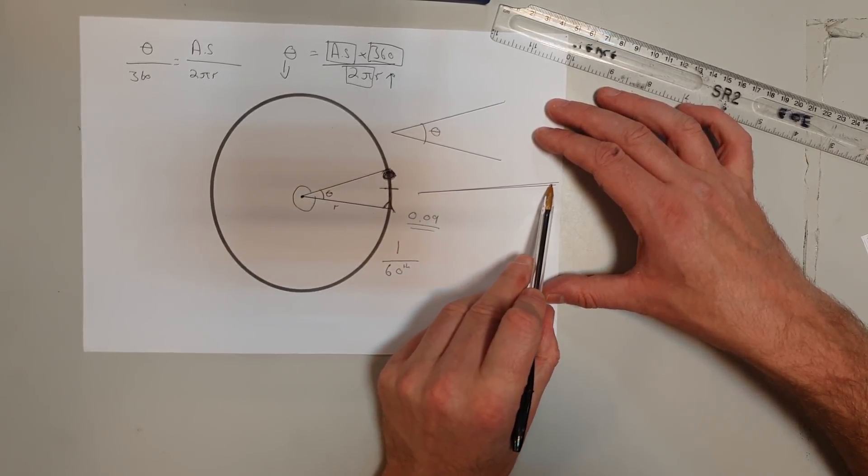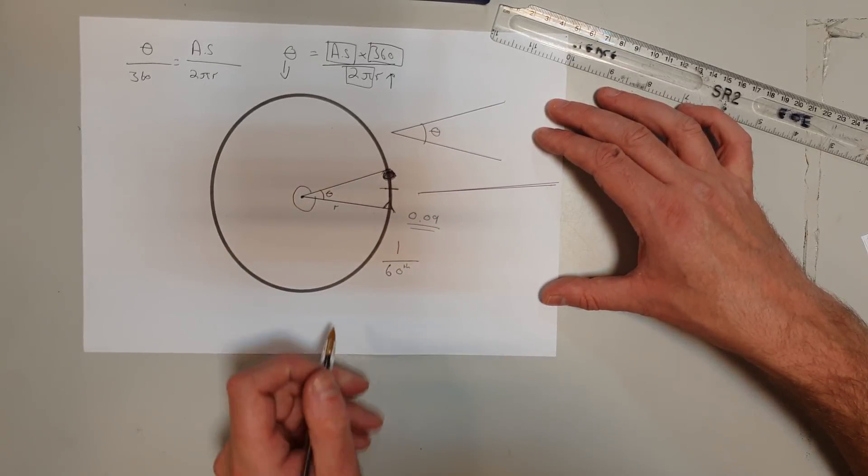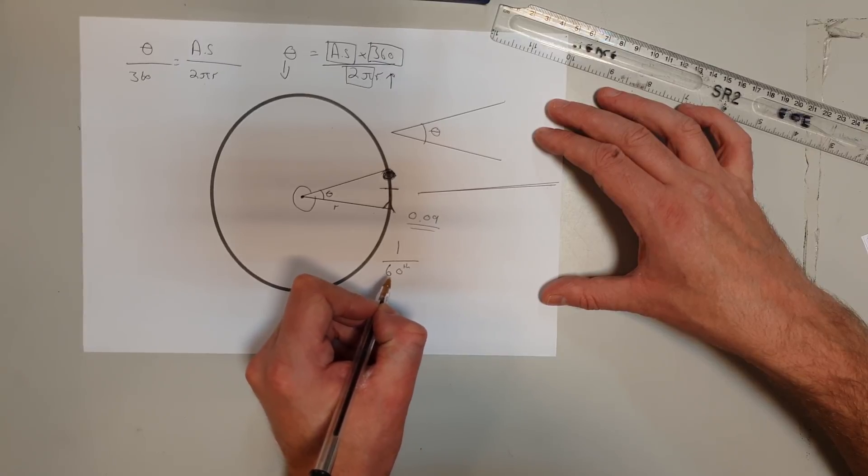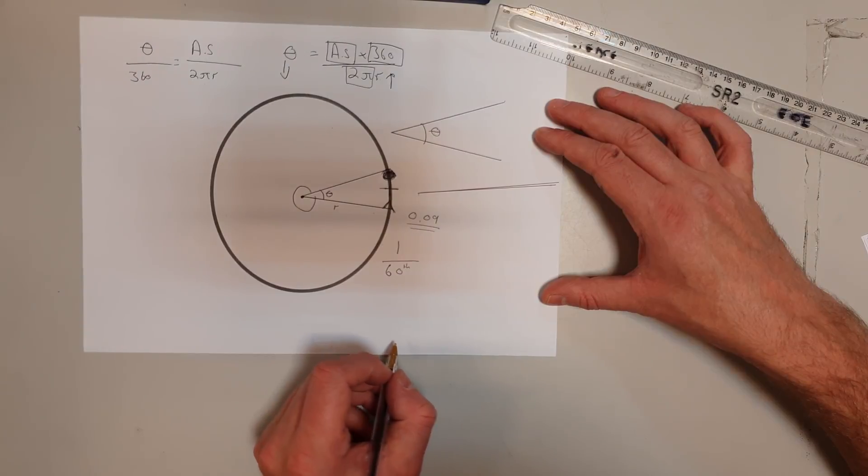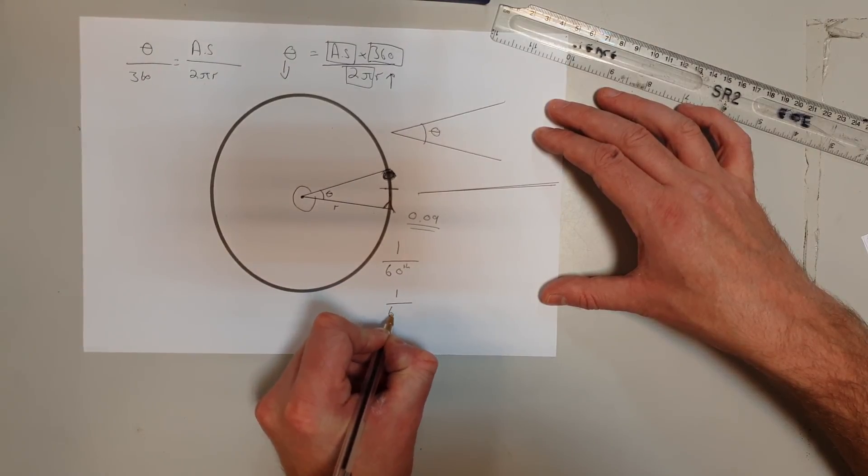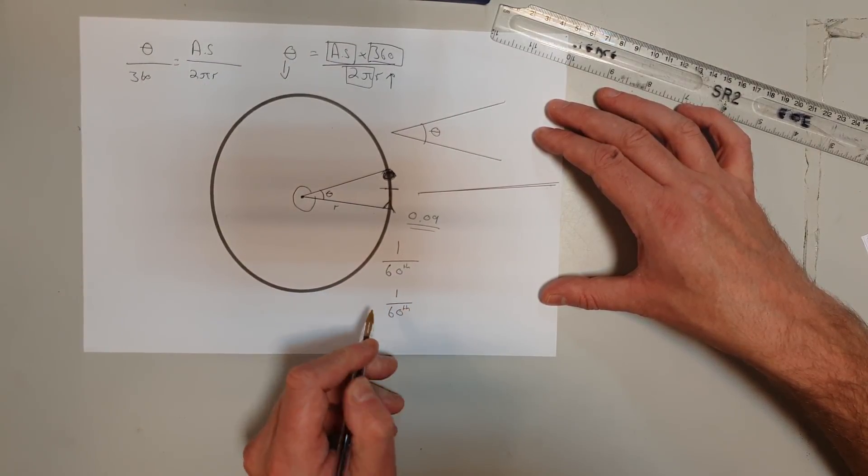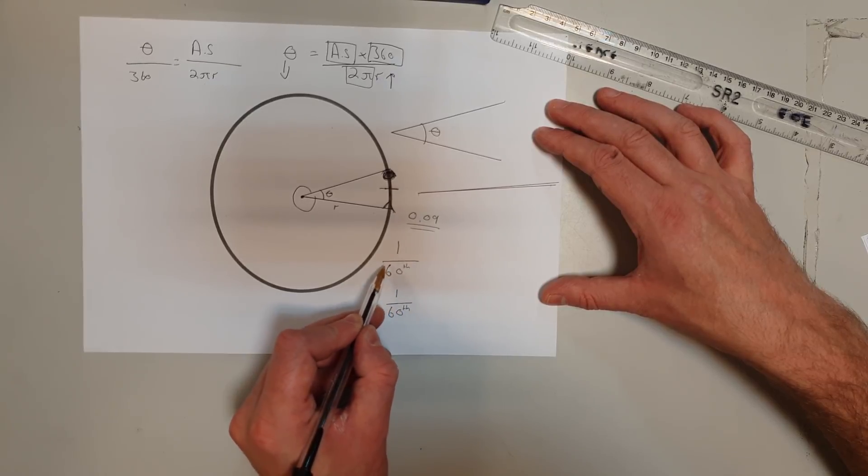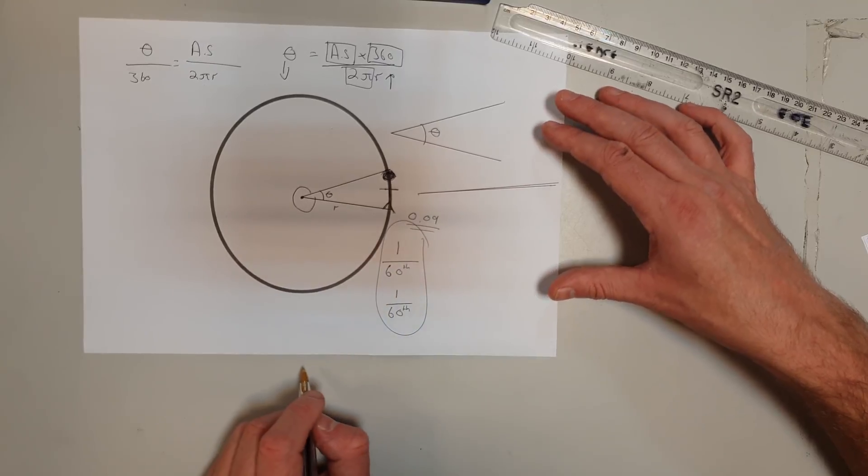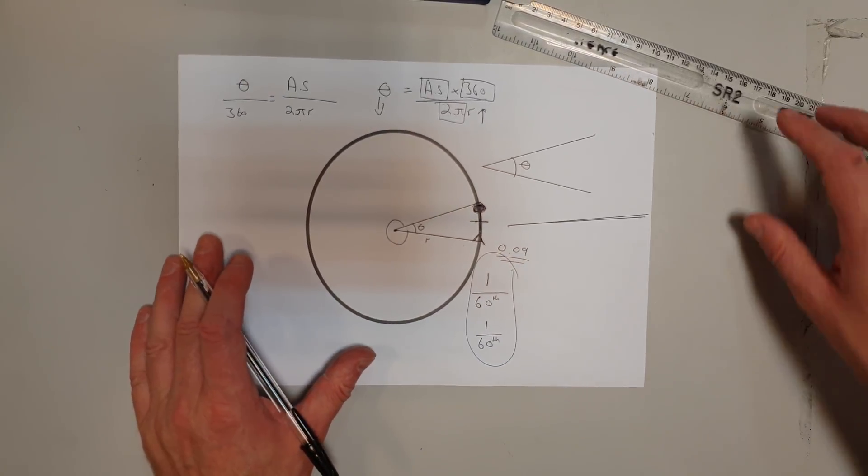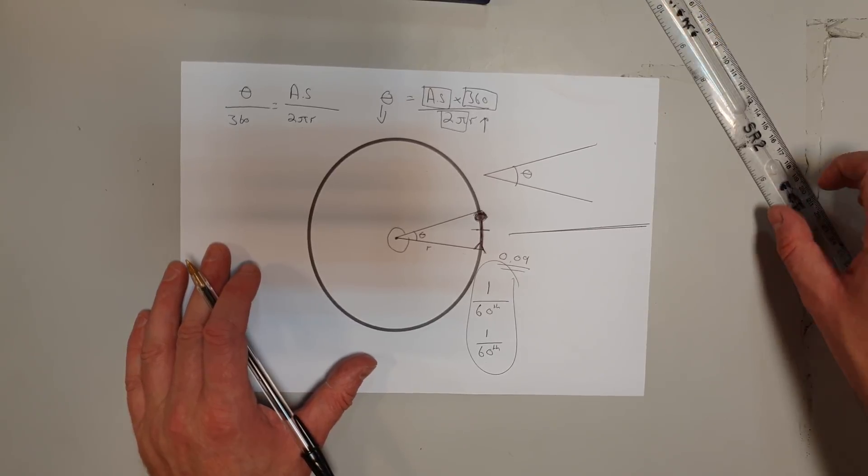But if something's got an even smaller angular size than that, we can look at arc seconds. An arc second is 1/60th of an arc minute, which is 1/3600th of a degree. So really, when we're talking about arc minutes and arc seconds, we're still working in degrees, just fractions of one degree.